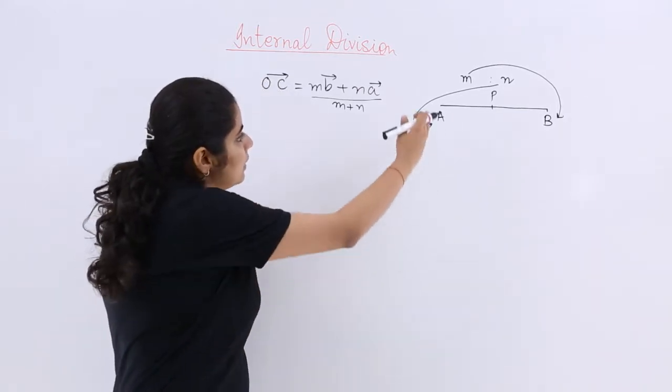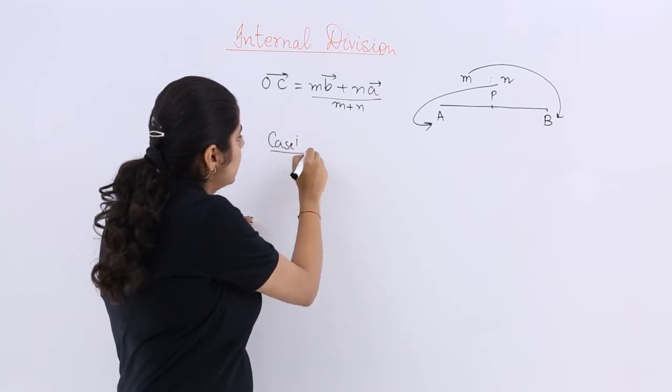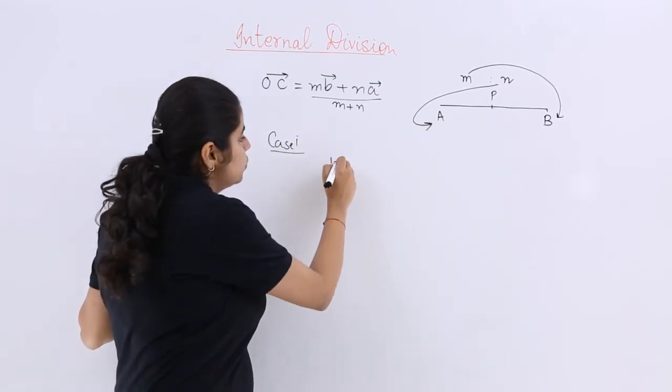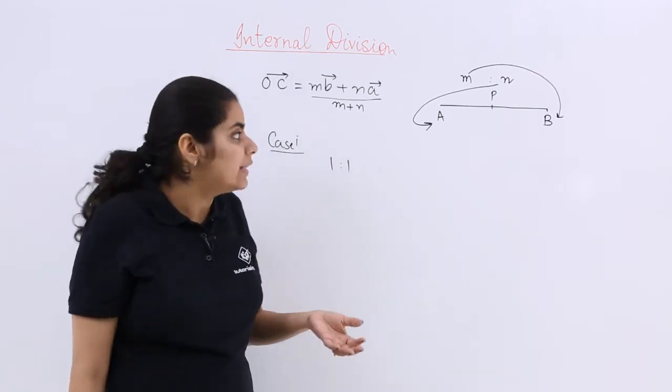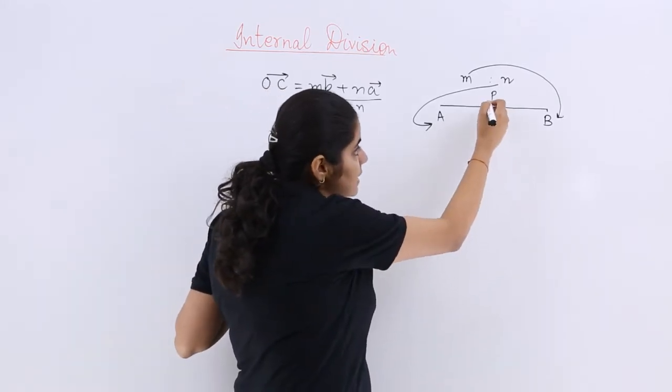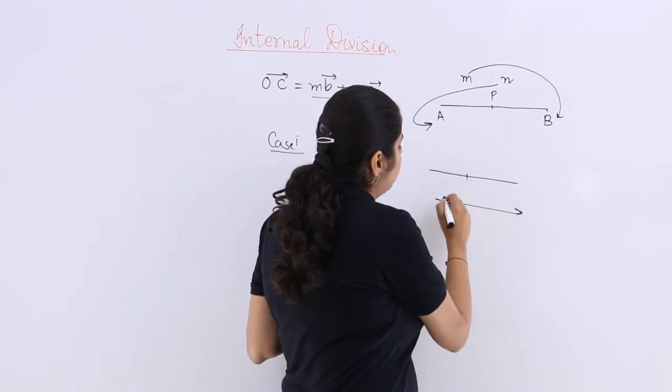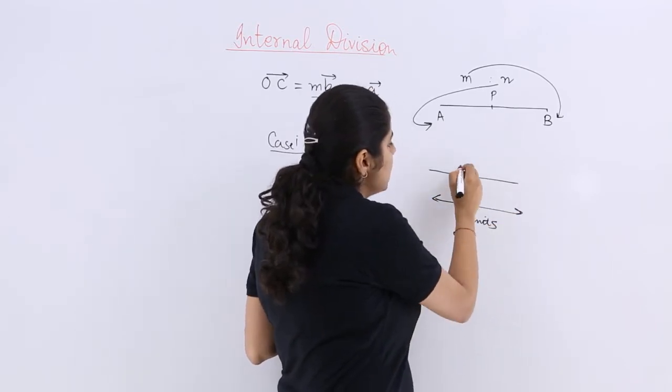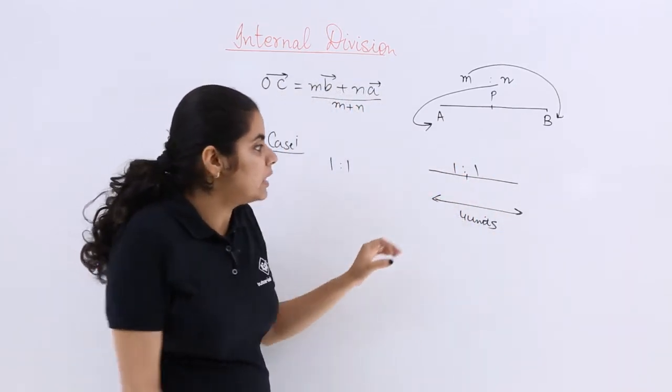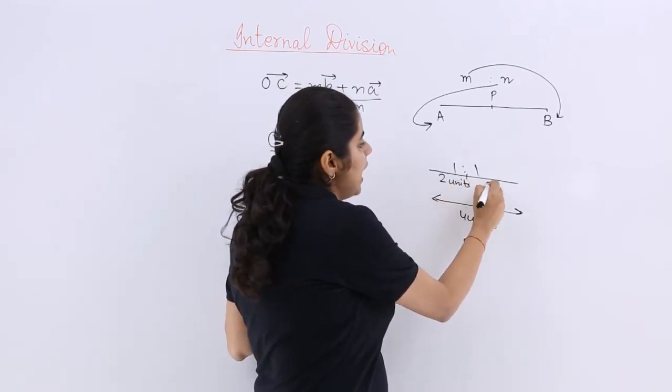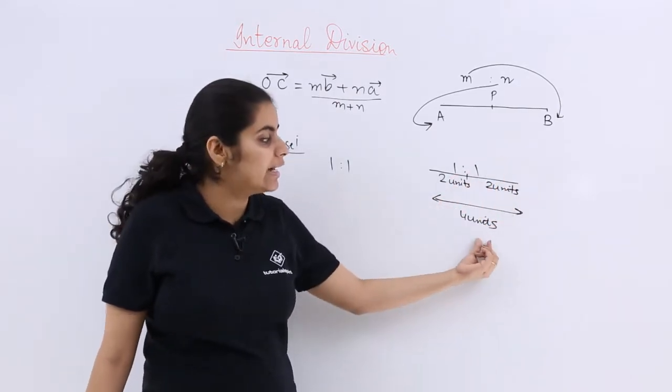If I say that M and N, so I write case 1, if I say M and N are 1 and 1, so the ratio that has to be found out is 1 is to 1. That means this P is exactly the midpoint because if there is a line segment of 4 units and I say 1 is to 1 is the division, that means this also should be 2 units and this also should be 2 units, then only 1 is to 1 is possible and they add up to give 4.